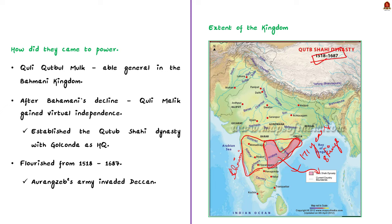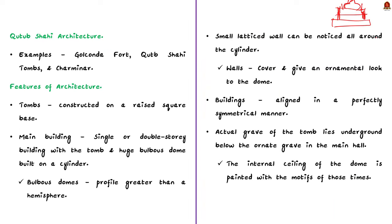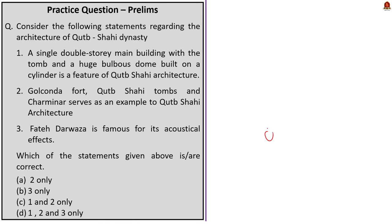Quli Qutb ul-Mulk, an able general, gained virtual independence after the disintegration of the Bahmani kingdom, establishing the Qutb Shahi dynasty. The kingdom flourished until 1687 when Aurangzeb's army invaded the Deccan. A special feature of the dynasty is their architecture — Golconda Fort, Qutb Shahi tombs, and Charminar are prime examples. With these points learned, let us move to the next news article.